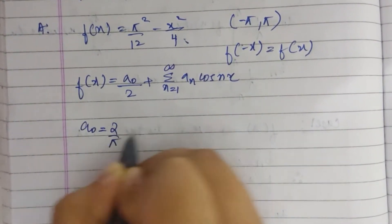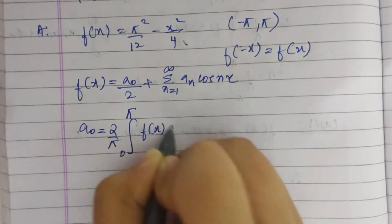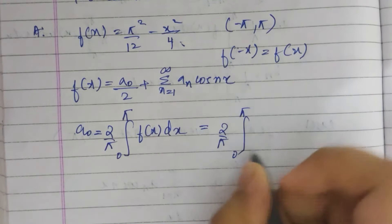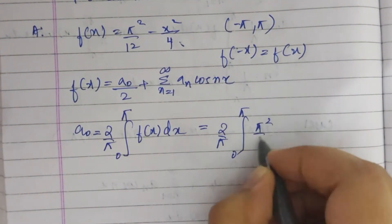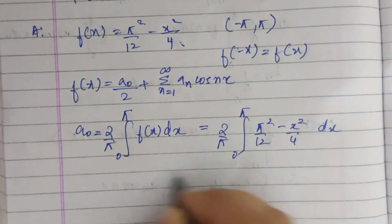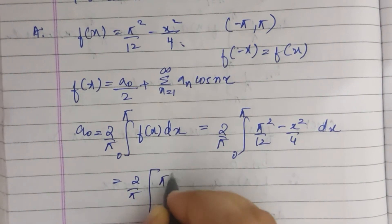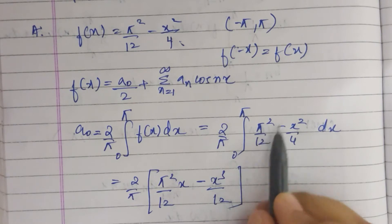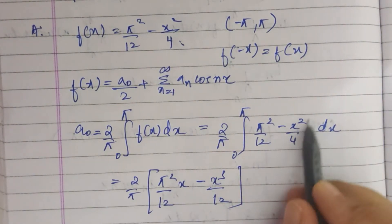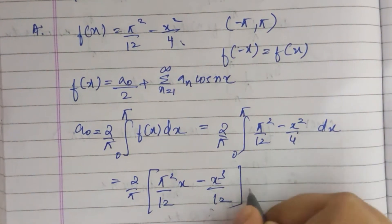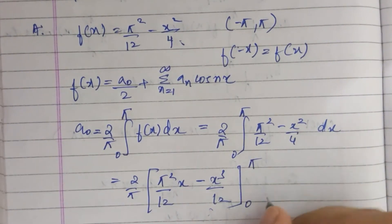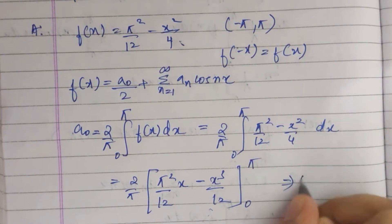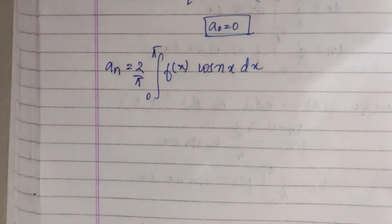Our a naught equals 2 by pi times the integral from 0 to pi of f of x dx. We substitute pi squared by 12 minus x squared by 4, and on integrating we get pi squared by 12 times x minus x cubed by 12, evaluated from 0 to pi. The integration of x squared is x cubed by 3, and 3 times 4 gives 12. On substituting the limits, the terms cancel and a naught equals 0.